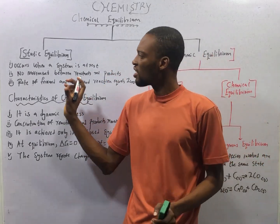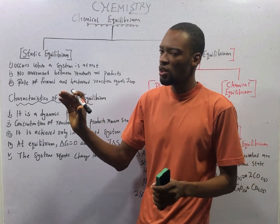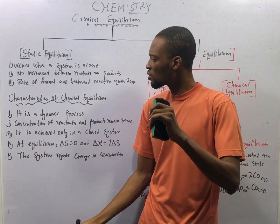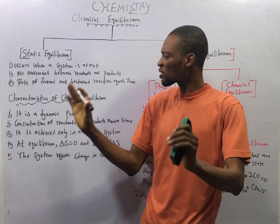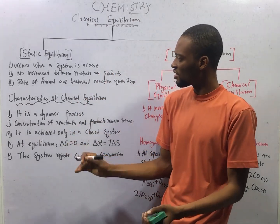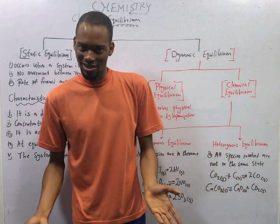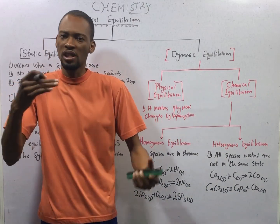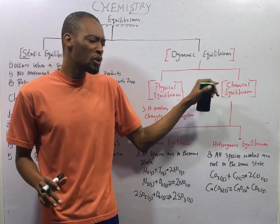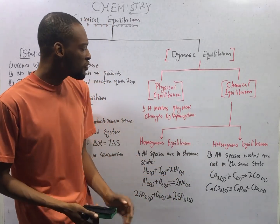Let's see the types or classification of chemical equilibrium. Chemical equilibrium can either be static equilibrium or dynamic equilibrium. Static equilibrium occurs when the system is at rest — there is no movement between the reactant molecules and the product molecules. The rate of forward and backward reaction equals zero. Dynamic equilibrium occurs when the system is in motion but balanced — the movement of one side is equal to the movement of the other side.